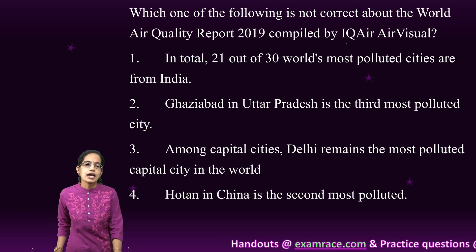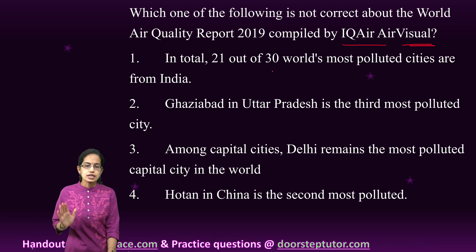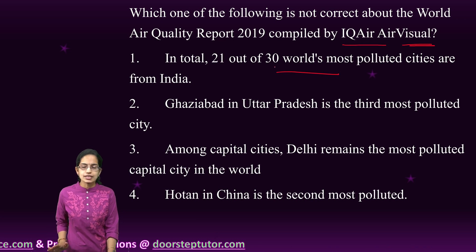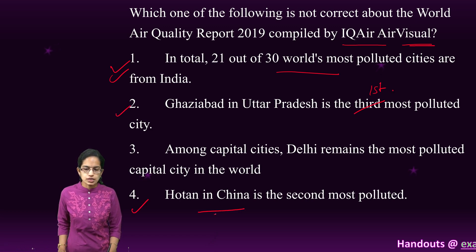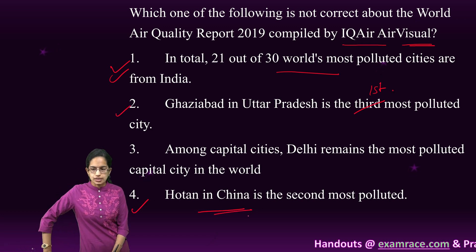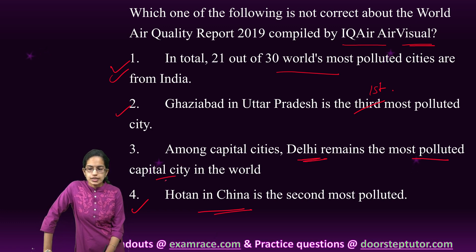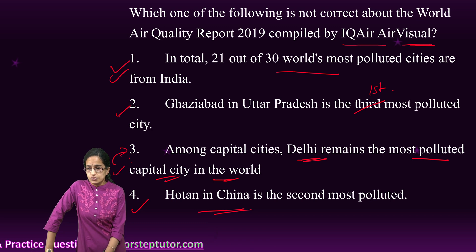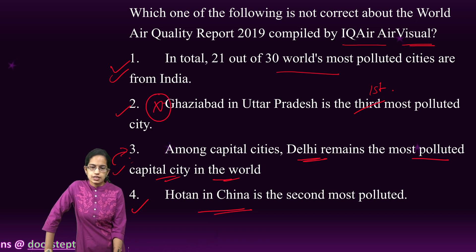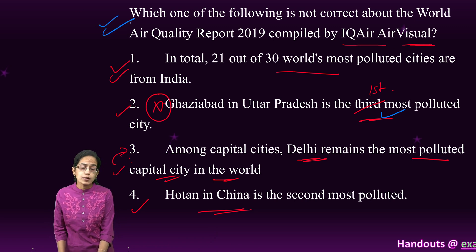A very important question: the air quality report compiled by IQ Air Visual stated that out of the world's 30 most polluted cities, 21 are from India. Ghaziabad in Uttar Pradesh is the first most polluted city in India, followed by Hotan in China, then two others from Pakistan including Faisalabad. Delhi is the most polluted capital city in the world. The incorrect option referenced it as second — it is actually first.